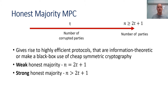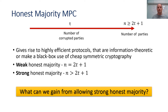Within this setting we can distinguish between two sub-settings: the weak honest majority setting where n is exactly 2t plus 1, which is the minimal number of parties required to maintain honest majority, and the strong honest majority setting where n is strictly larger than 2t plus 1. The main question we ask is what can we gain in terms of concrete efficiency from allowing strong honest majority.